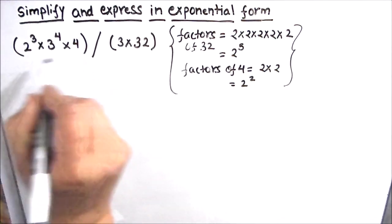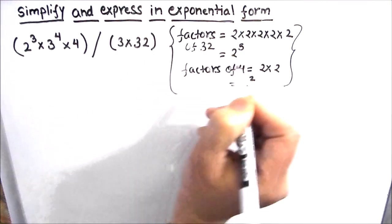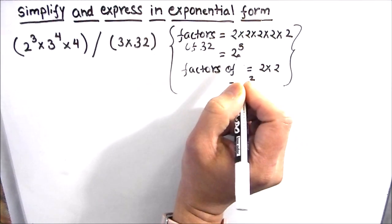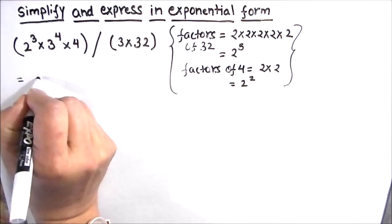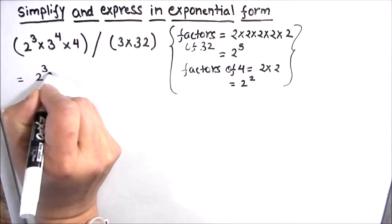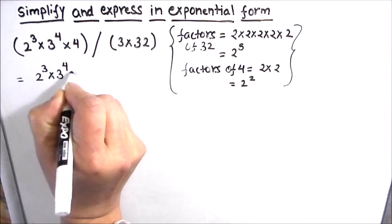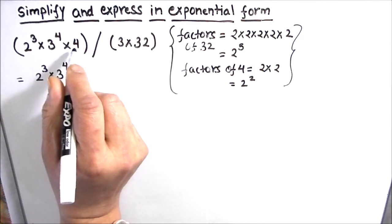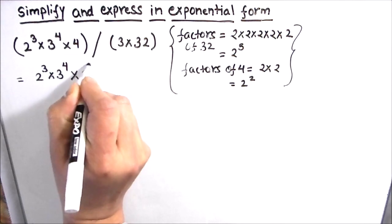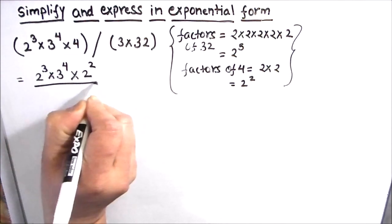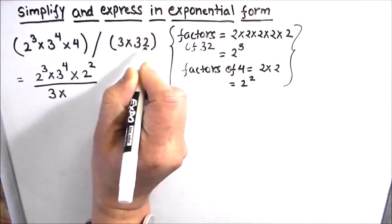Now let us come back to our question. We are going to replace 4 and 32 with 2 to the power 2 and 2 to the power 5 respectively. So here we have 2 cubed times 3 to the power 4 times 2 squared, divided by 3 times 2 to the power 5.